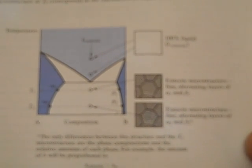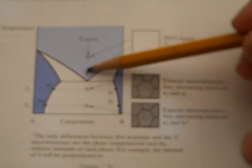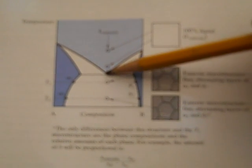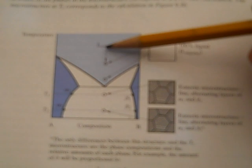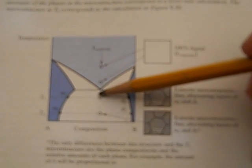So a eutectic composition is one in which as you cool you go directly from liquid to solid. It's a sudden transition where everything gets solid all at once. So here would be the equivalent to water and here would be the equivalent to ice.